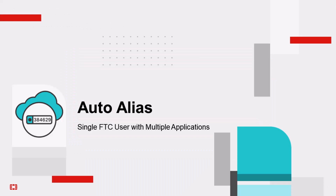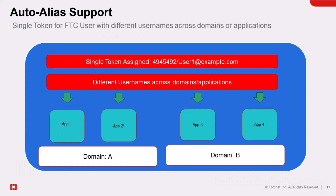Another very useful feature is called auto-aliasing — a single FortiToken Cloud user with multiple applications. Enabling the auto-alias feature allows FortiToken users to use a single email address with different usernames across various applications or domains. With this feature, a single FortiToken Cloud user can have different usernames and different authentication clients while using the same token. The purpose is to attribute different usernames to the same user, ensuring that only one token is assigned.